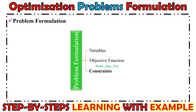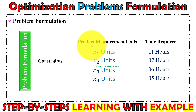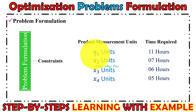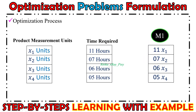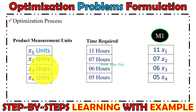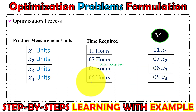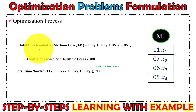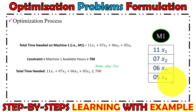Next we define the constraints, which are the restrictions. For machine 1, each unit of product one requires 11 hours, so we have 11x1. Each unit of product two requires 7 hours — that is 7x2. Product three requires 6 hours — 6x3. Product four requires 5 hours — 5x4. So the total time required on machine one is 11x1 + 7x2 + 6x3 + 5x4.